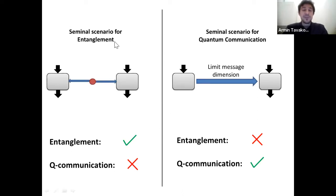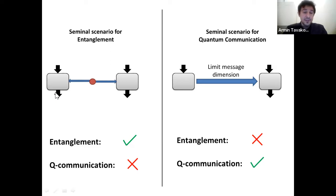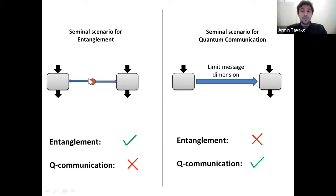On the left, we have the seminal scenario for studying entanglement. A source distributes two shares of a system that is entangled to two observers. They can perform some measurements locally and record their outcomes. We study the correlations between their outcomes and learn something about the underlying physics. These scenarios are used for entanglement detection, quantum steering, Bell nonlocality, and many other problems.